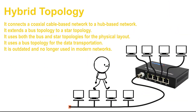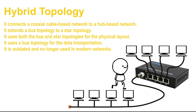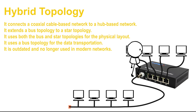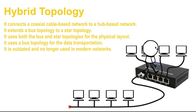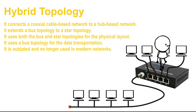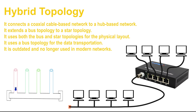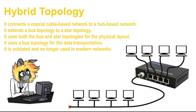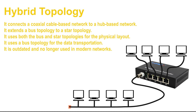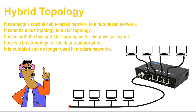A hybrid topology connects two different topologies. It was mainly used during the transition period when networks were migrating from the coaxial cable-based bus topology to the hub-based star topology. It uses a bus topology for data transportation. It allowed administrators to use the hub-based star topology for new networks while maintaining connectivity with existing coaxial cable-based networks. This topology is no longer used in modern networks.